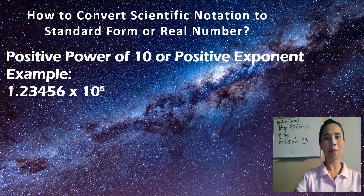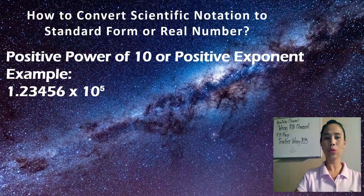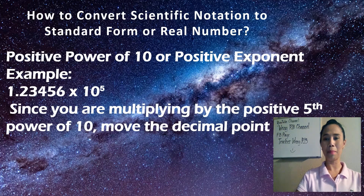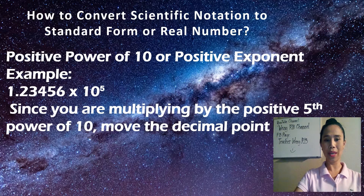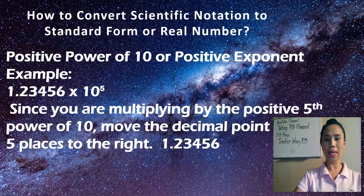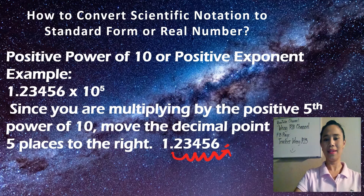Let's have another example of converting scientific notation to standard form with positive power of 10. The example is 1.23456 times 10 to the 5th power. Since you are multiplying by the positive 5th power of 10, we move the decimal point five places to the right. The decimal point is between 1 and 2, so moving 1, 2, 3, 4, 5 places means the decimal point is after 6. Our final answer is 123,456.